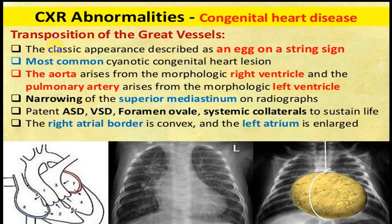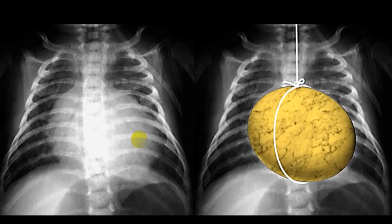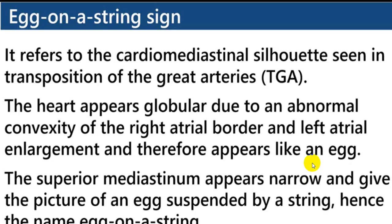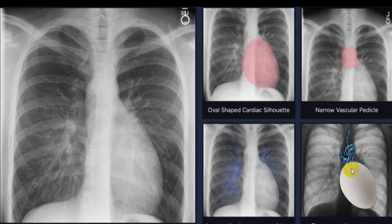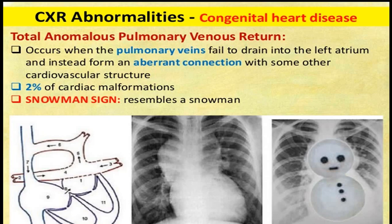In transposition of the great vessels, there is a peculiar heart shape called egg on a string — it looks like an egg shape with a string. This gives the typical name egg-on-a-string appearance, which is characteristic of transposition of the great vessels.